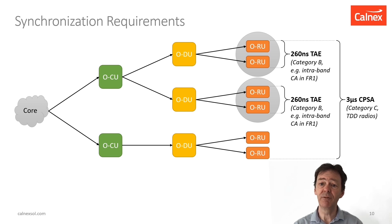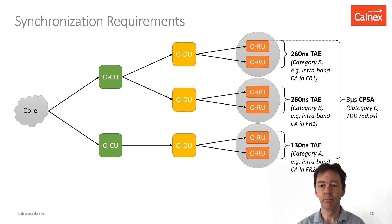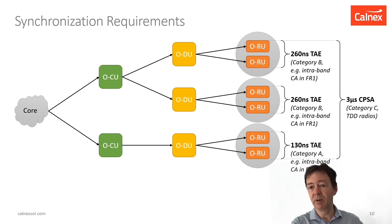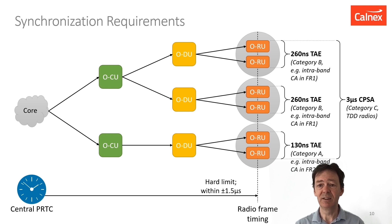Or if they're operating in frequency range 2 — which is a multi-gigahertz range, 20 to 50 GHz — that requirement is 130 ns. Now, timing is ultimately coming from a central time reference, and the radio units are required to meet plus or minus 1.5 microseconds from that central time reference. This guarantees that they'll meet the 3 microsecond cell phase synchronisation accuracy.